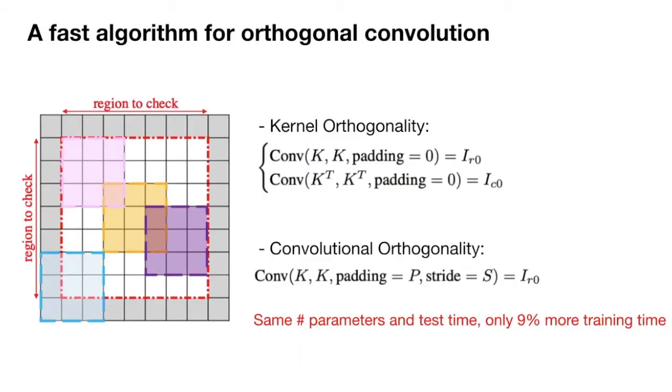Since most convolutional kernels have a very small spatial size, we provide an efficient algorithm to implement this regularization, which only introduces 9% training time overhead.